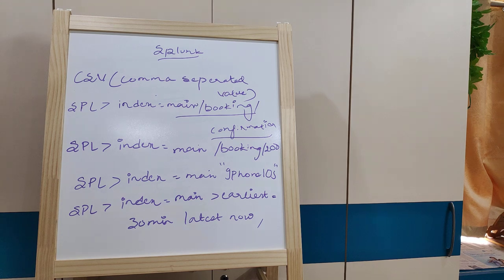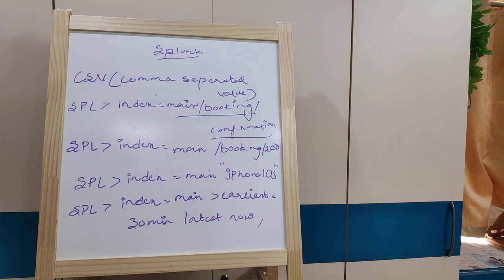These are simple commands and examples. For index=main, you can use stats count to count events by GET and POST methods — two important HTTP methods. In Splunk it is easy to get data and post data, and you can use stats functions to analyze them.